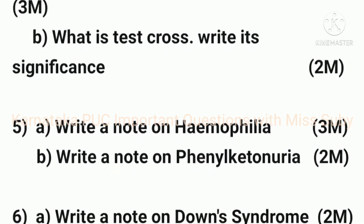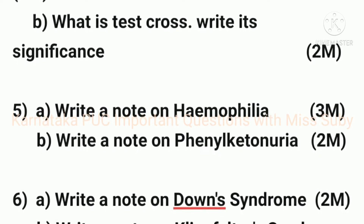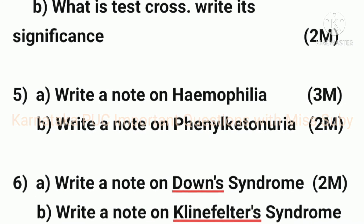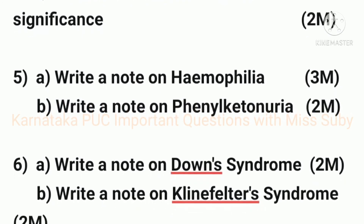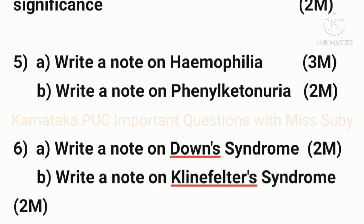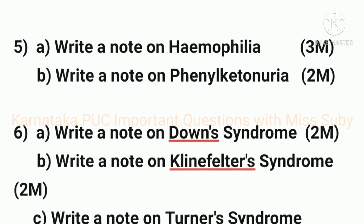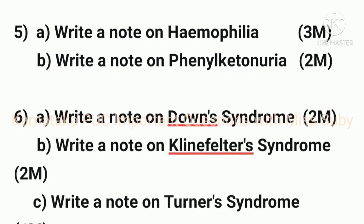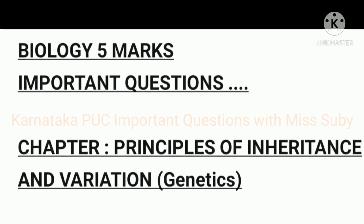The fifth question is: write a note on phenylketonuria — it carries two marks. The sixth question is split into three sub-questions. The first is: write a note on Down syndrome, which carries two marks. The third sub-question is: write a note on Klinefelter's syndrome, which carries one mark.